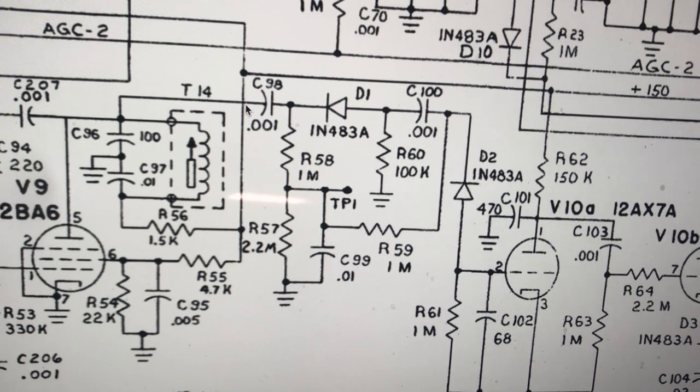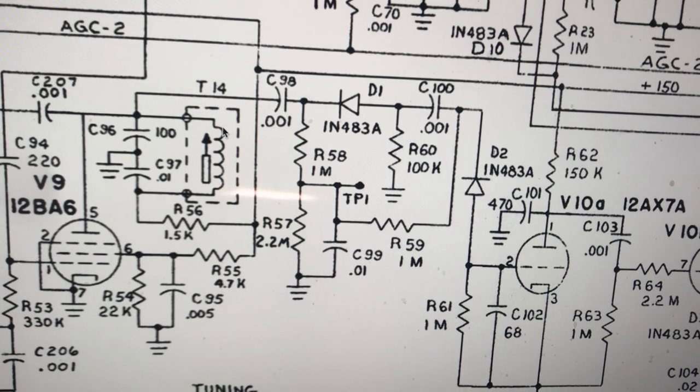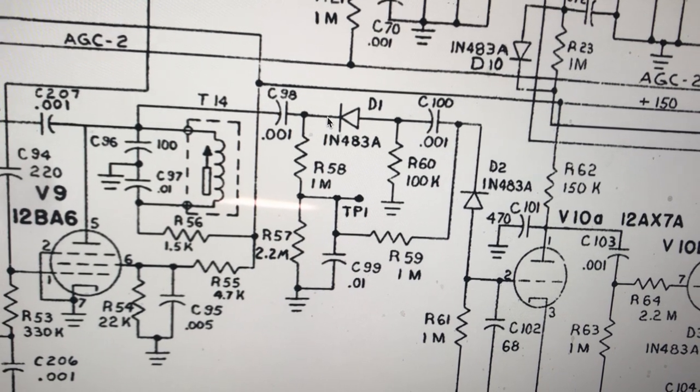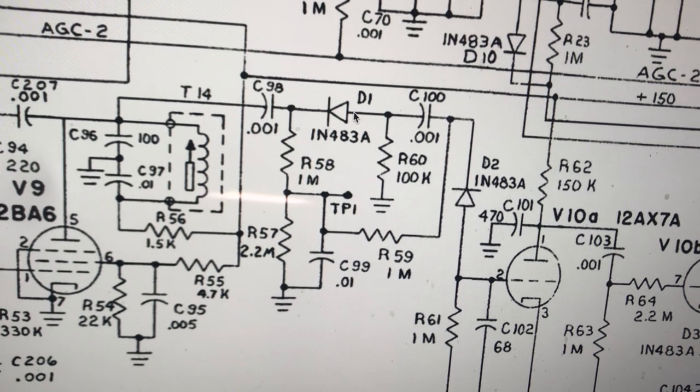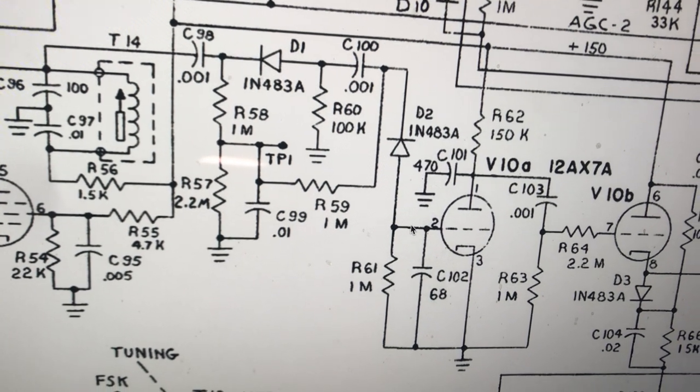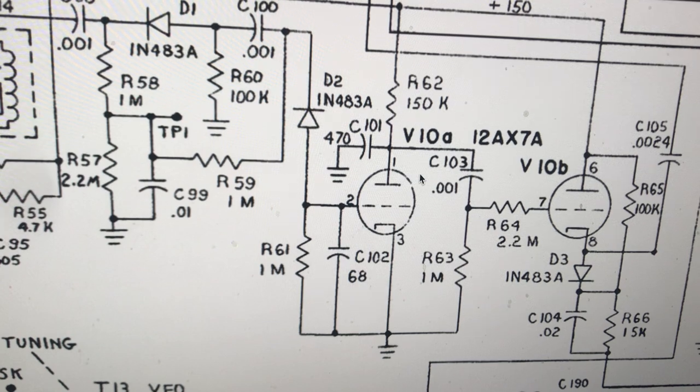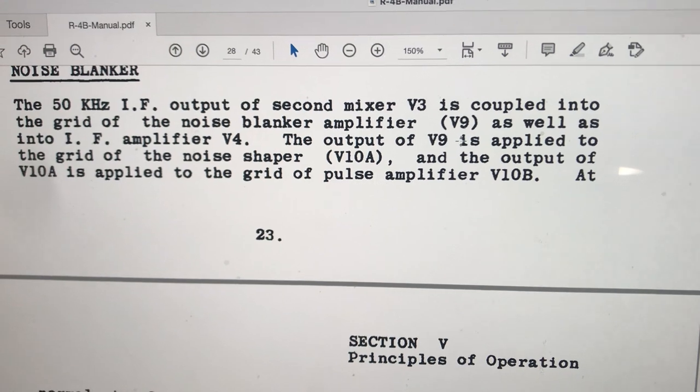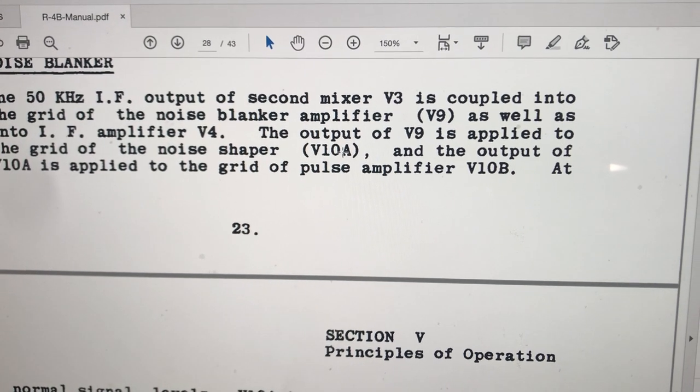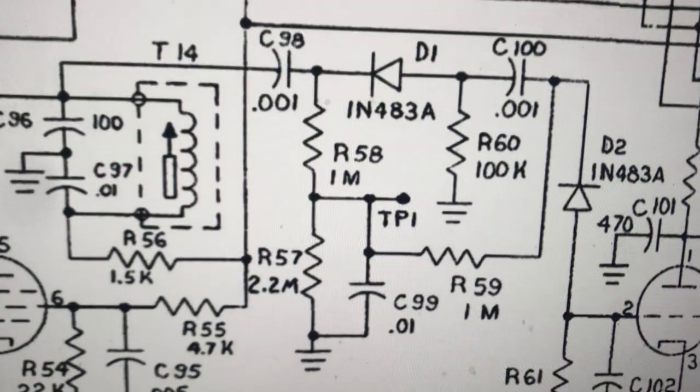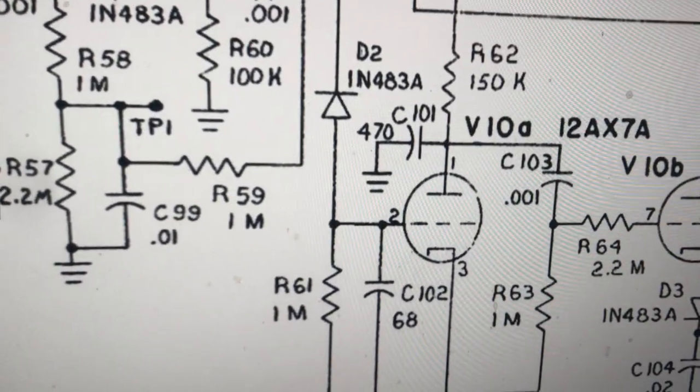Here they take RF off of this transformer which looks like it simply resonates and they pass it through this diode and then a coupling capacitor and then another diode and it finally ends up here at pin 2 of V10A. The output of V9 is applied to the grid of a noise shaper, V10A. So that indeed is the grid of the noise shaper.